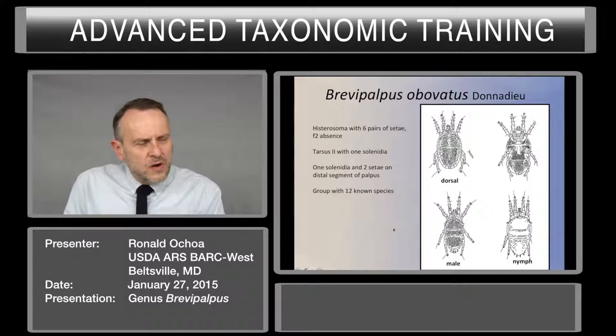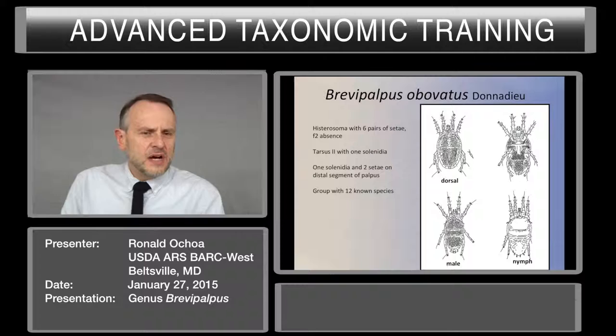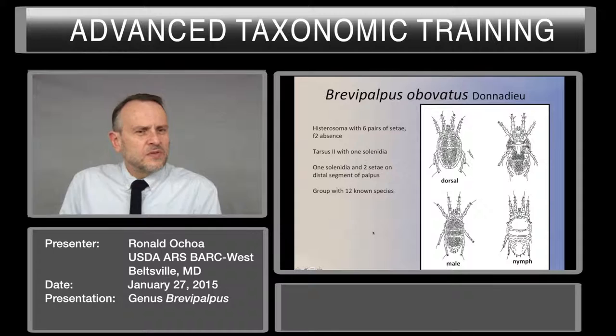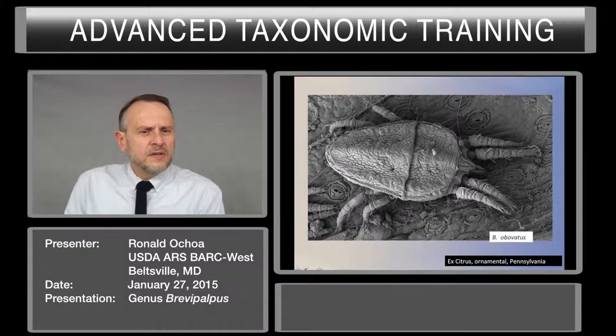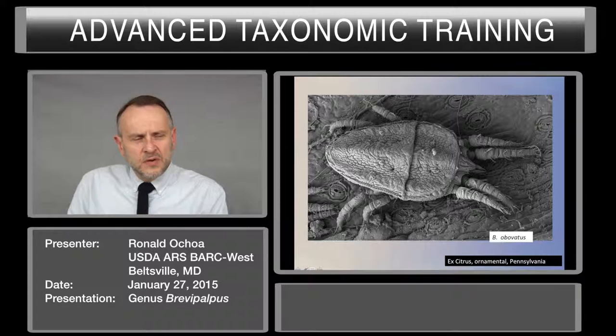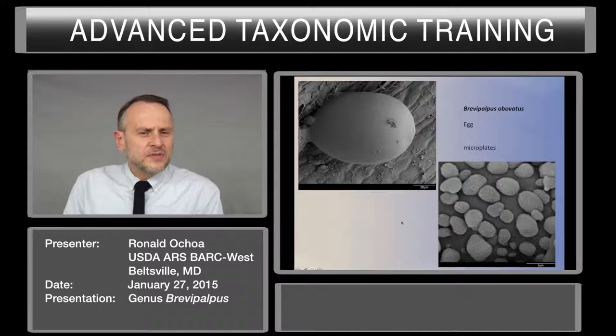Brevipalpus ovatus — this is one of the best known groups, and perhaps the oldest species described in the genus Brevipalpus. The hysterosoma has six pairs of setae, F2 is absent, tarsus 2 with one solenidia, one solenidia and two setae on the distal segment of the palp. The group has around 12 valid species. However, the one that is important for us is just ovatus, and it's a pest usually in greenhouse conditions or ornamentals.